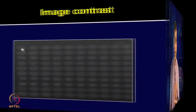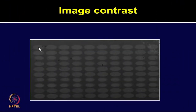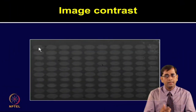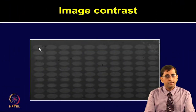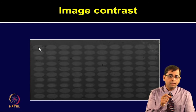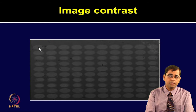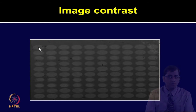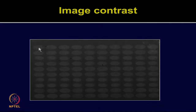In SPR imaging, as the term says, an image is generated. You can see in this slide the image contrast is shown, and each of these circles represents a spot printed on the surface of the gold chip.